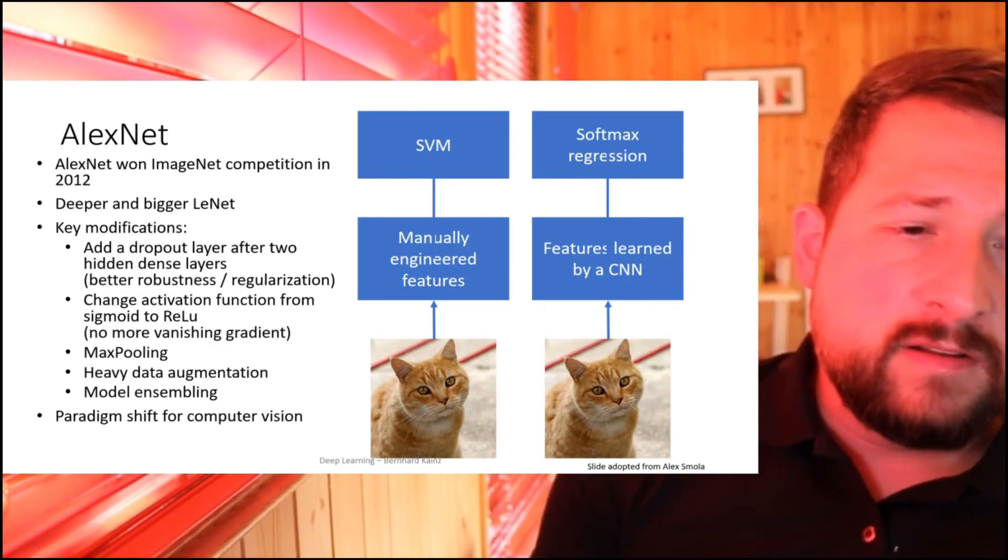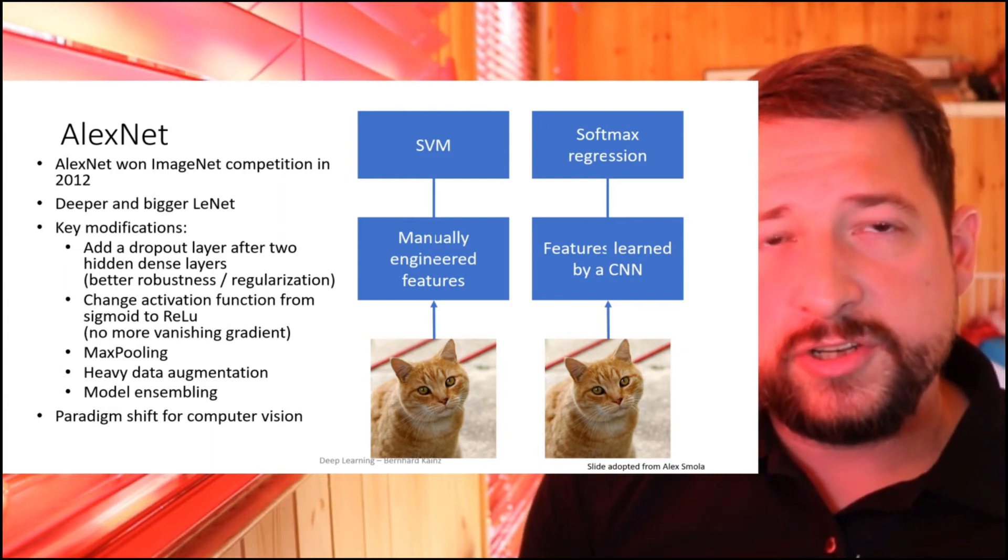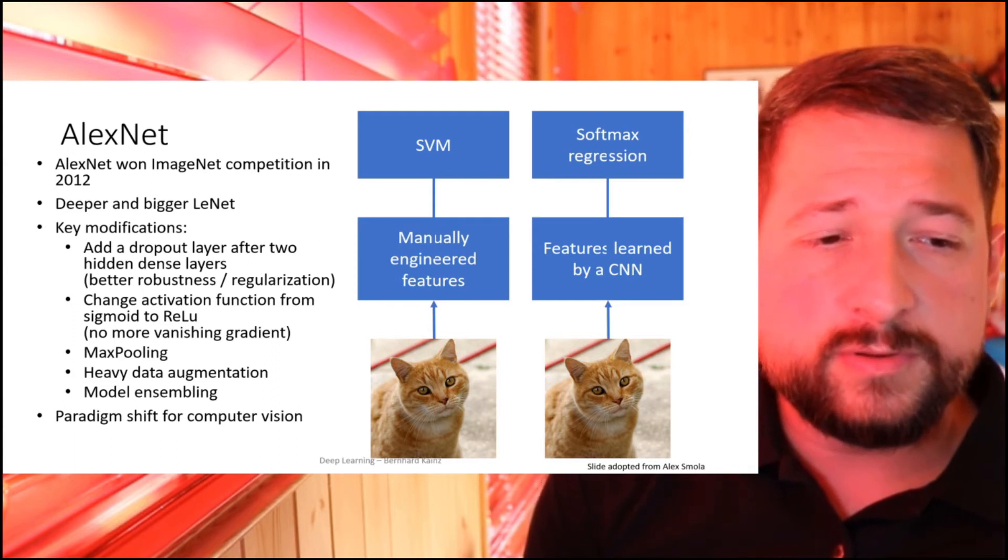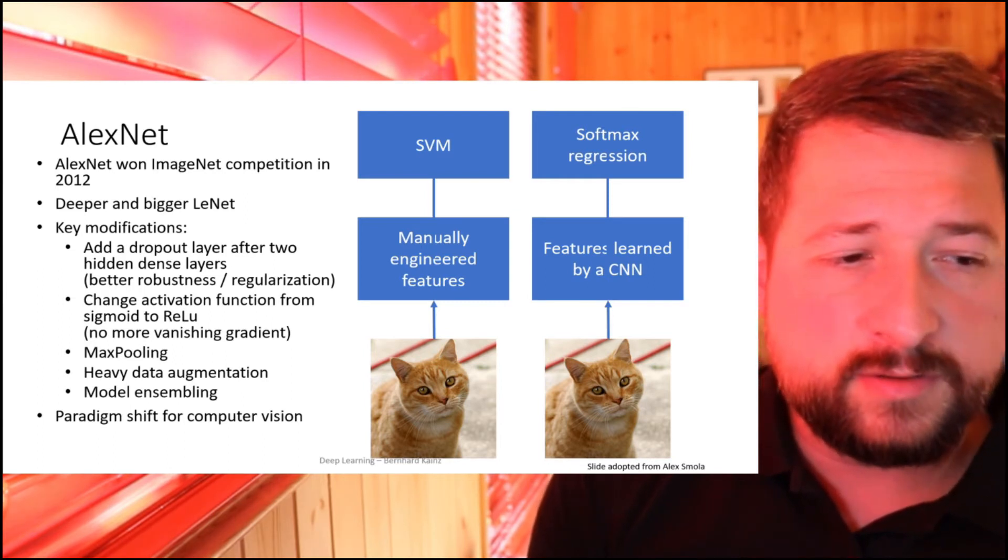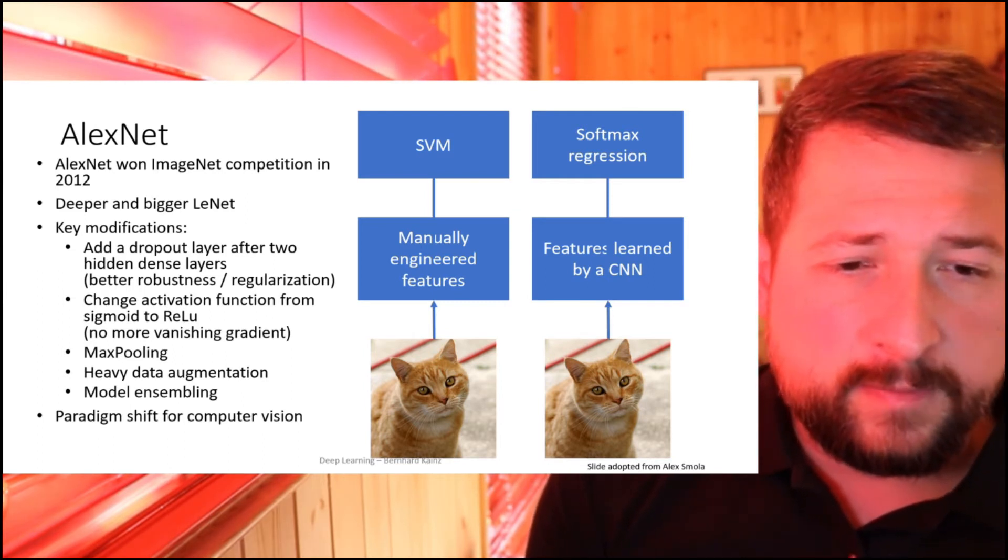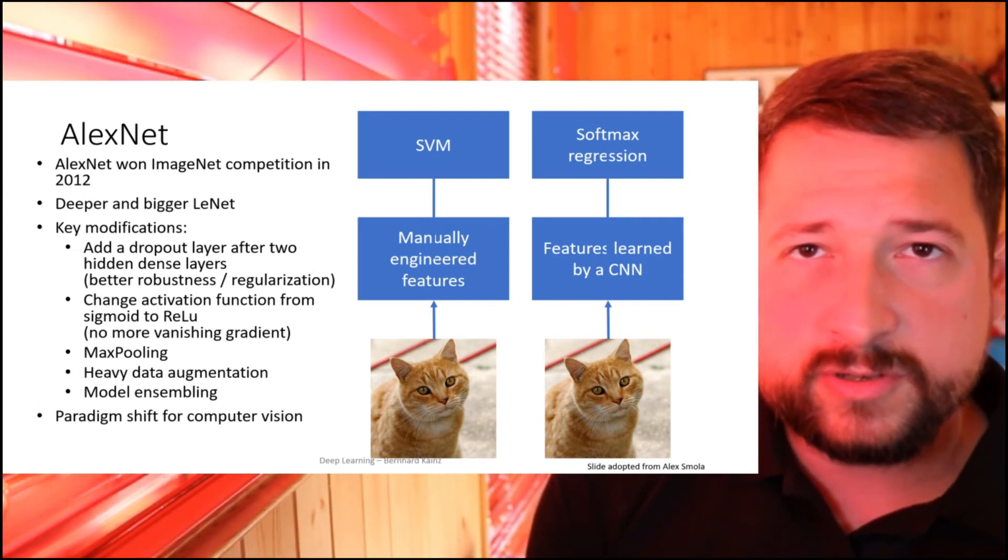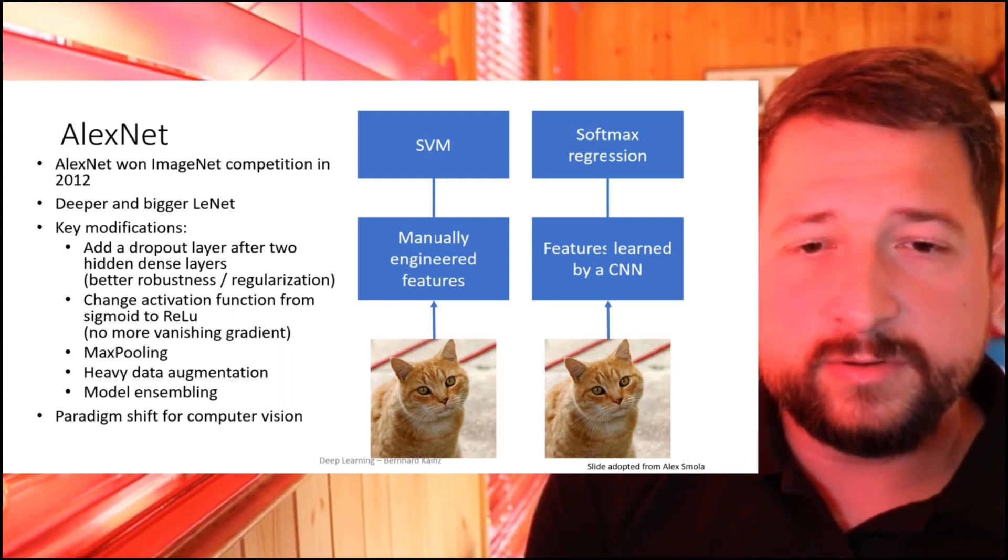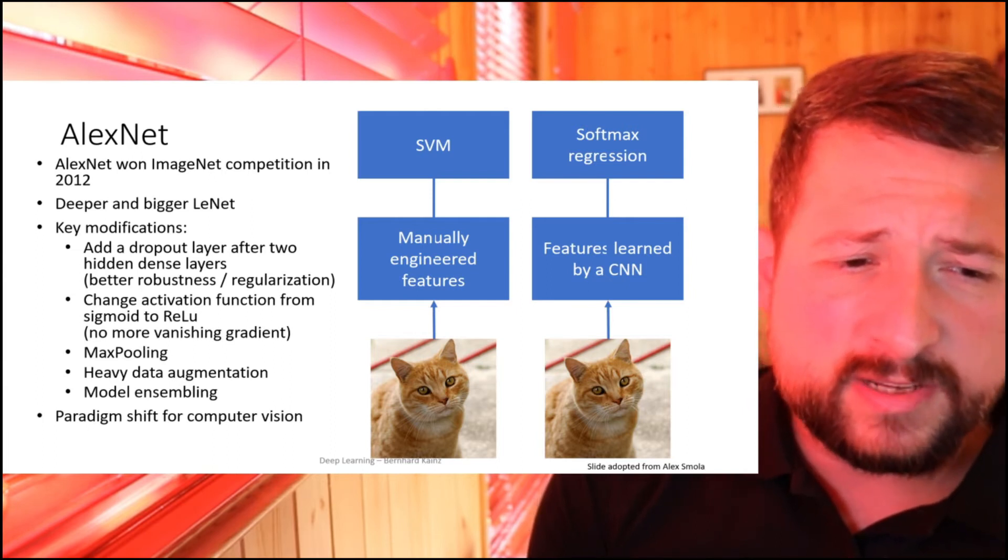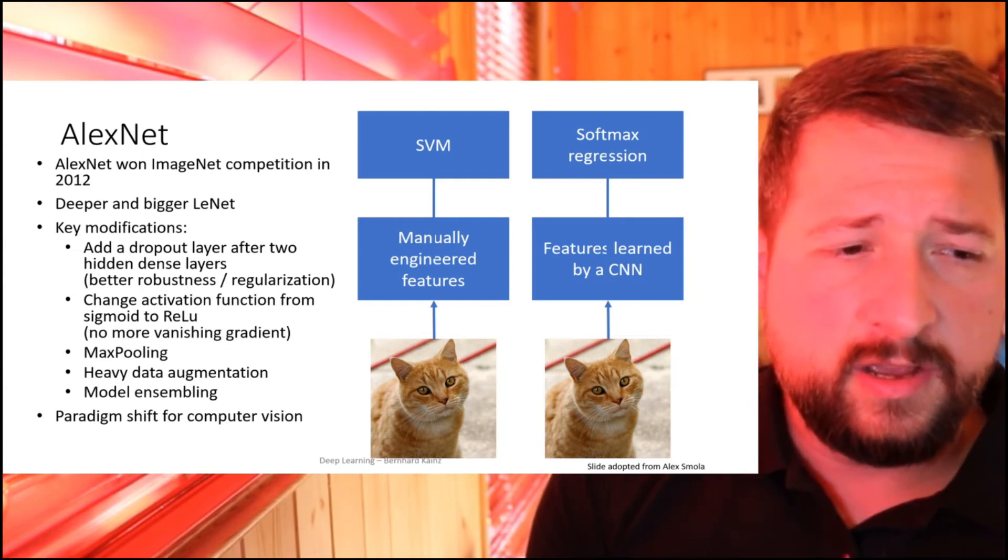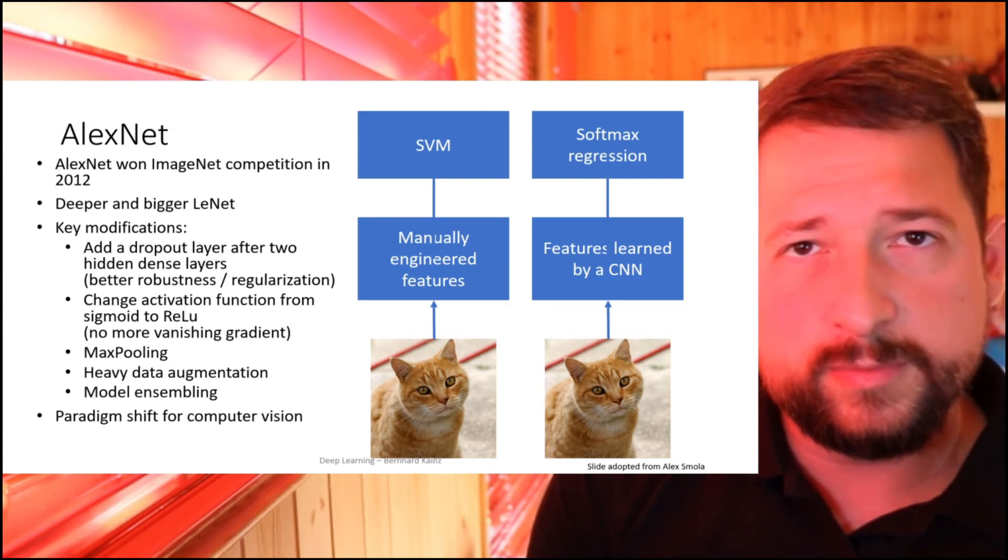Until 2012, around the time when AlexNet won the ImageNet competition, the default strategy for solving computer vision problems was to go and pick manually engineered features and apply an SVM in the end. If you came up with a smart strategy to handcraft features, then you were pretty much sorted, got tenure, and had a good career in computer vision. Now this was replaced by features that were learned automatically, followed by a softmax function, and that pretty much defined a paradigm shift for the computer vision community.